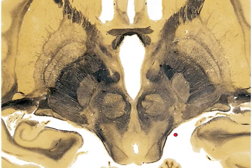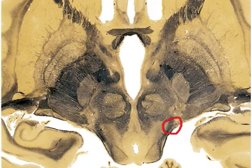And then we have the medial lemniscus, which is about right here. The medial lemniscus is also a bundle of fibers originating from the brain stem carrying information about proprioception and light touch to the thalamus.